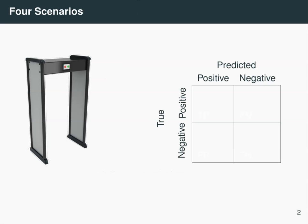In these binary classification tests, there are four scenarios for what could happen. We're going to illustrate this using the example of the metal detector at the airport, and Mr. Pickles is going to go through it.